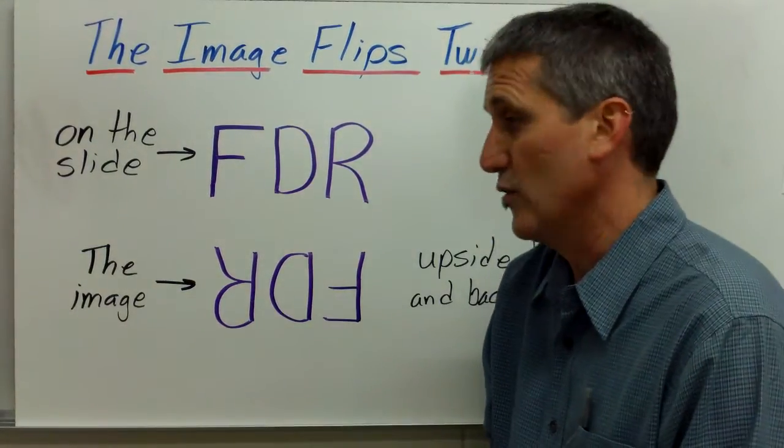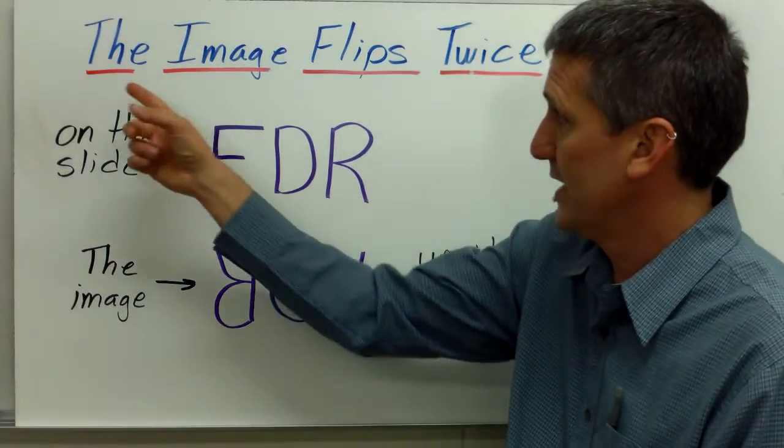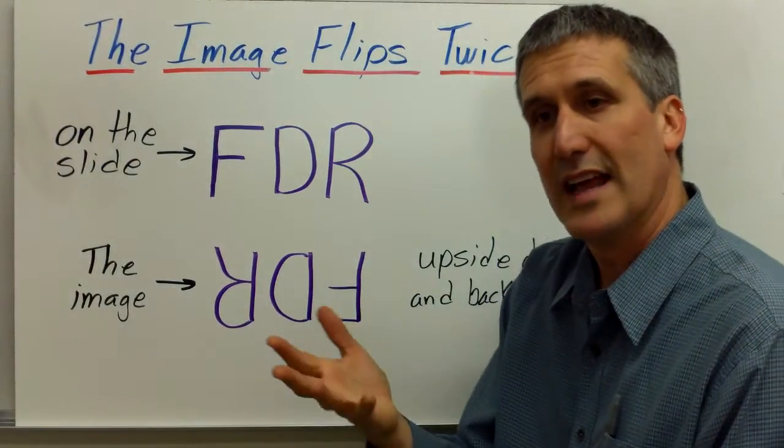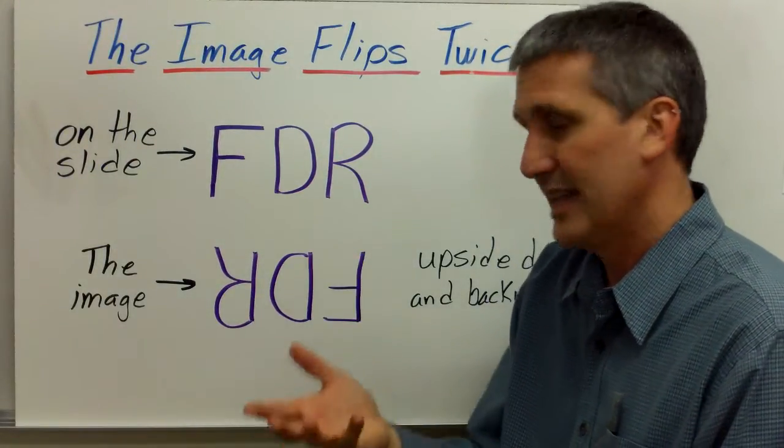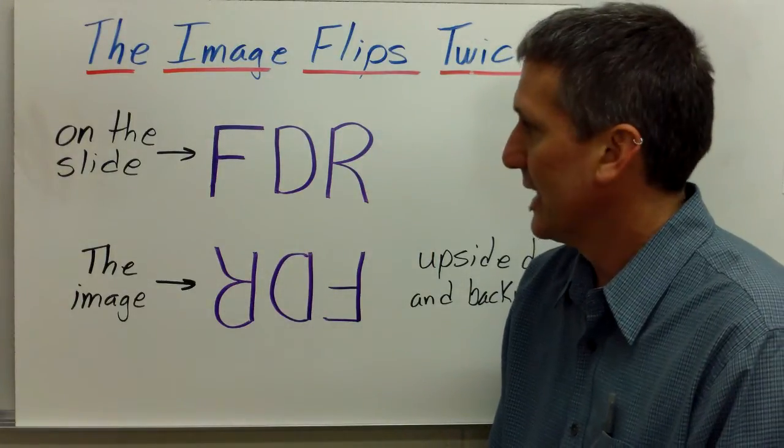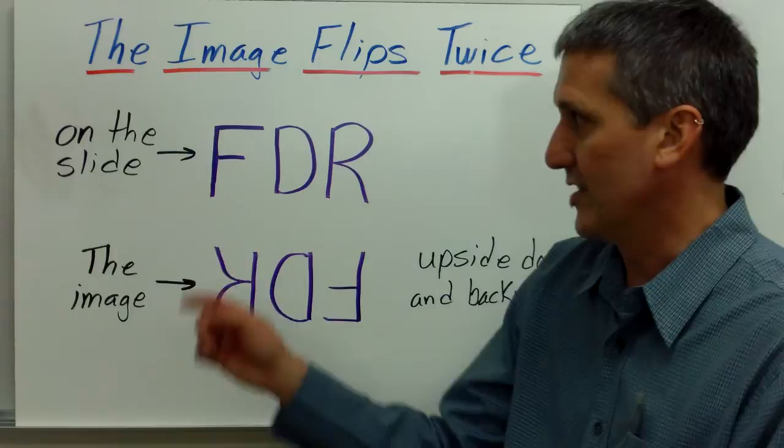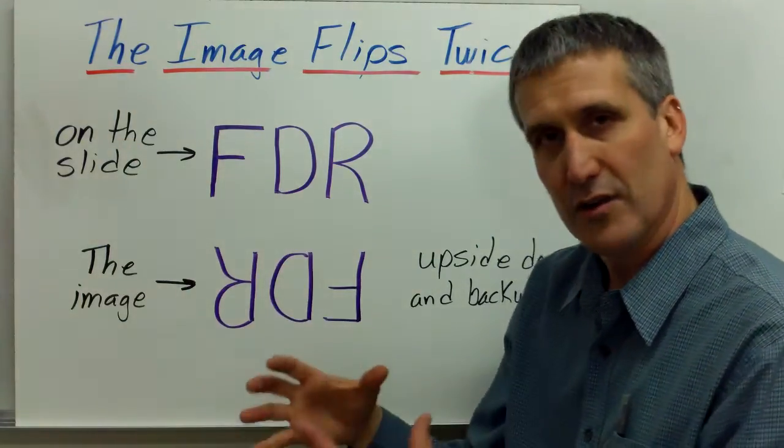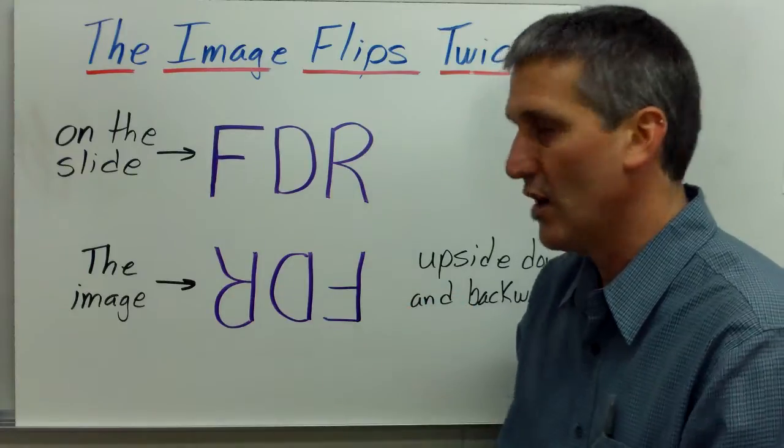The next thing that we want to understand in order to be PMU is that the image flips twice because there's two lenses, and because of the optics, the actual image is flipped when it's being magnified by the optic in the lens. So, we take this quick example. If you have FDR, and if you're looking at the slide, and it says FDR,